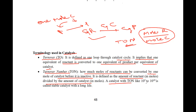A catalyst with a TON of 10⁵ to 10¹⁰ is called a stable catalyst with a long life.